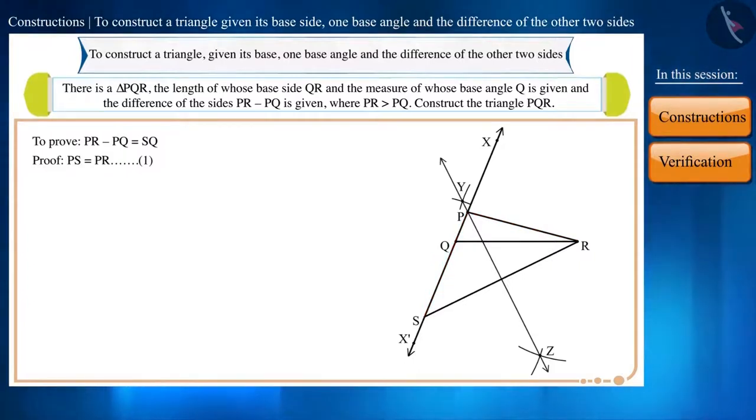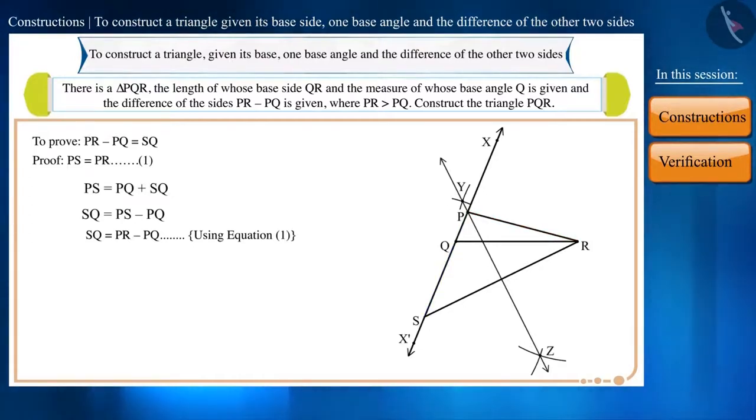And the line segment PS is formed by joining two line segments PQ and SQ. So PS equals PQ plus SQ. We can write it like this as well. Or SQ equals PS minus PQ. That is, the length of side SQ is equal to PR minus PQ. Therefore, our construction is correct.